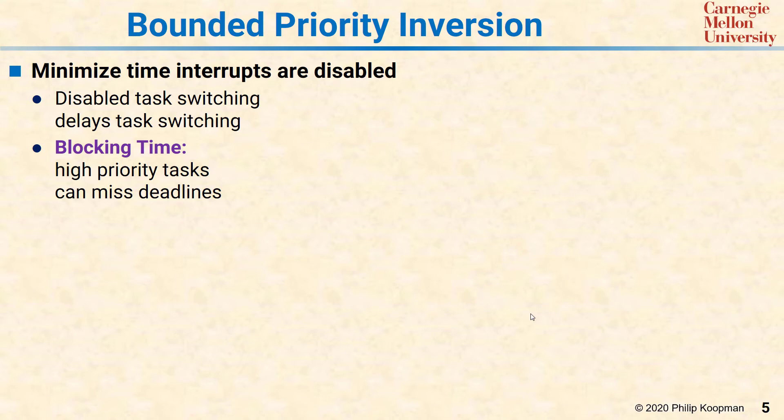Whether you're using disabled interrupts or mutex, you're solving concurrency problems by locking shared resources to avoid a race condition. That's great, but it brings with it some potential problems that you have to deal with. The general concept for the types of problems you see is blocking time — the period of time in which the CPU has locked up either by disabling interrupts or using a mutex that prevents other tasks from running because they're waiting for that shared resource.